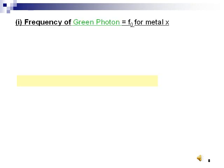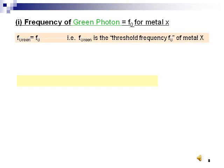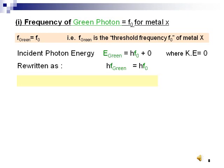In this example, only green photons can release the electrons from matter X. So, the frequency of the green photons we call threshold frequency. The expression of incident photon energy can be written as E equal to hf₀ plus zero, as there is no kinetic energy.